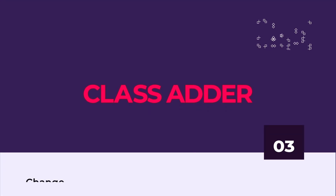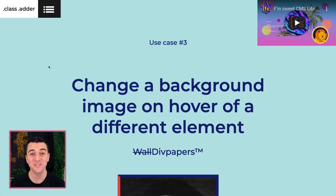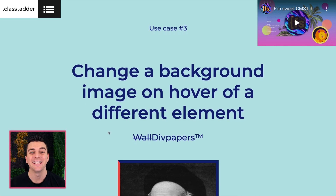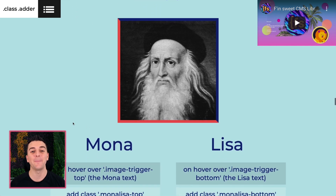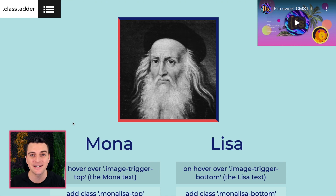Hi everybody, it's Joe Krug from FinSuite. Welcome to the ClassAdder tutorial series. In use case three, we're going to do something fun and interesting. We are changing a background image on hover of a different element. This is probably not something you would copy-paste right into your site — it's more for an educational overview of what you can do here, which is not possible inside Webflow interactions.